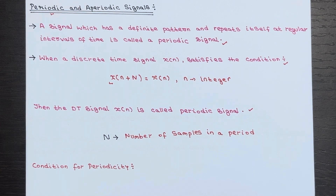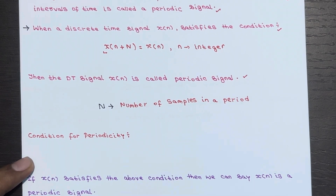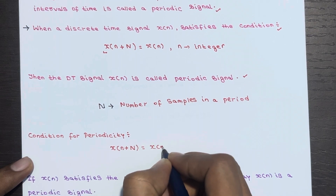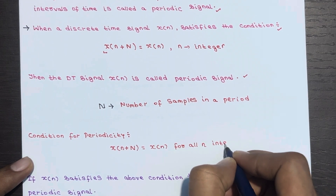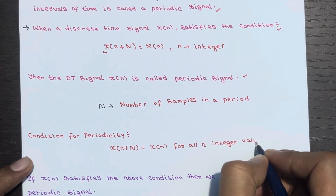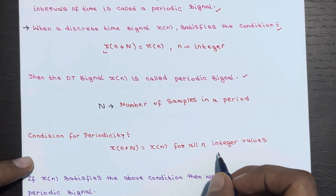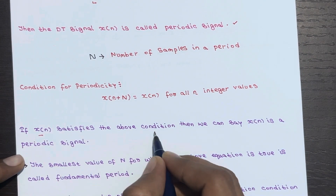How do we determine if a signal is periodic or not? We just need to check the condition for periodicity: X(n + N) should be equal to X(n) for all integer values of n. If this condition holds true for all integer values of n, then we can confidently say that X(n) is a periodic signal.